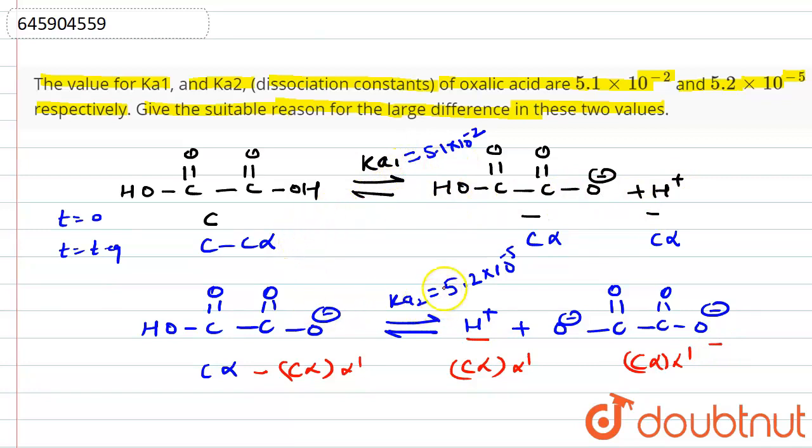Ka1 or Ka2, any constant, is defined as concentration of product divided by concentration of reactant. Here, more concentration will be provided in the first step in the product, so Ka1 will be more than Ka2.